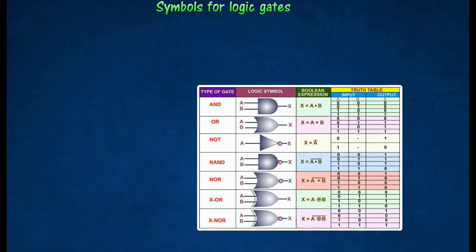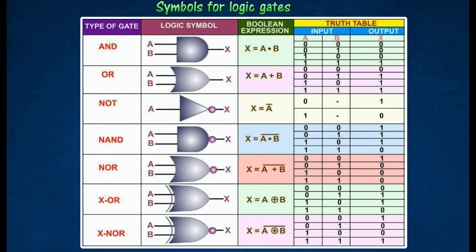Each Logic Gate is represented by its symbol so that it can be recognized easily. Different types of Logic Gates can be built up from different arrangements of electronic components connected together in small integrated circuits on a tiny silicon chip.